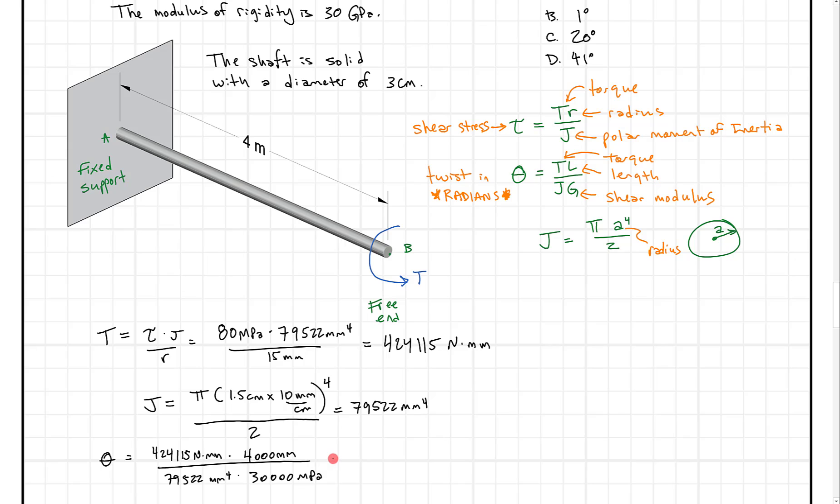And again if we have megapascals, newtons, millimeters the units all work out nicely. And when we solve this we're going to get 0.7111. And remember the twist is in radians.